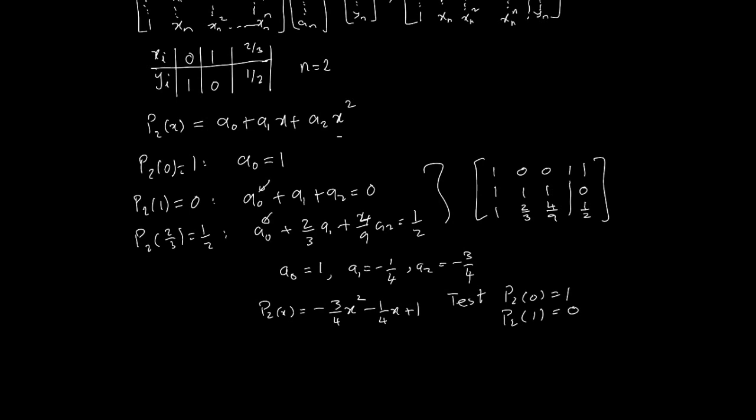And similarly, p2 of 2 thirds, if I do that, when you substitute that in here, 4 ninths, so you'll have minus, and you get minus 1 sixth plus 1, and that turns out to be equal to, that indeed is equal to a half. So, it works out.